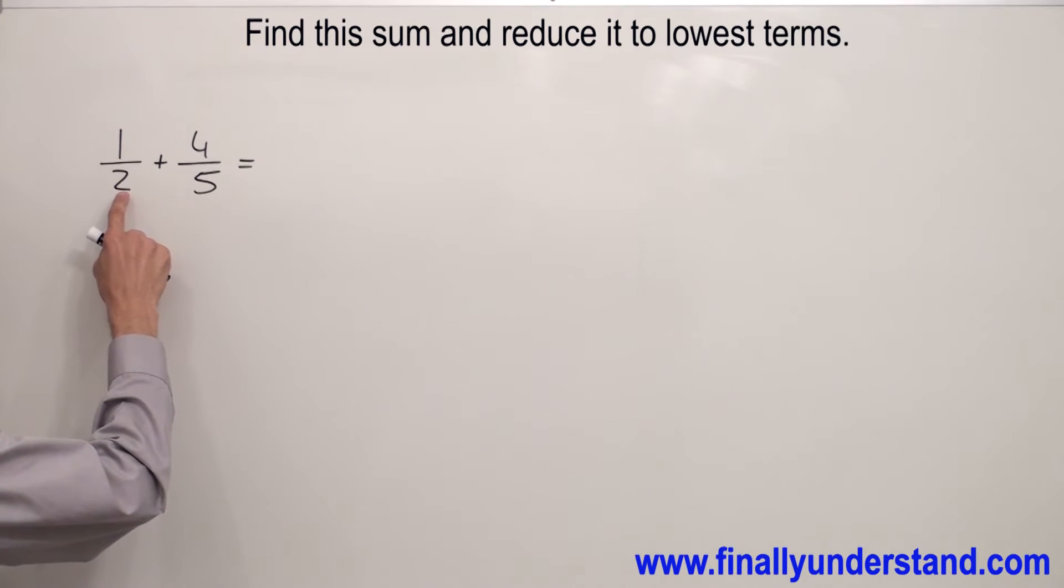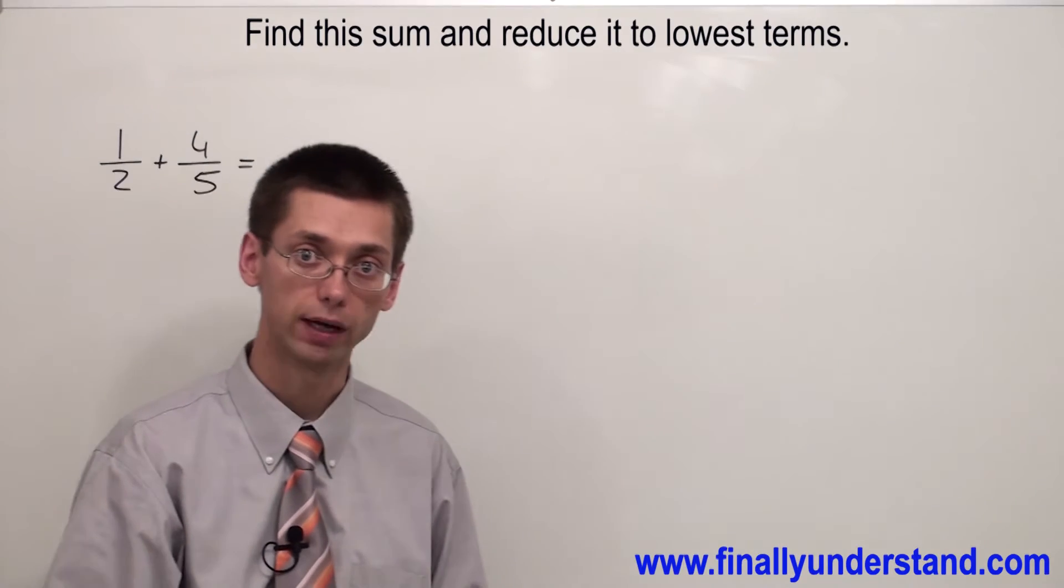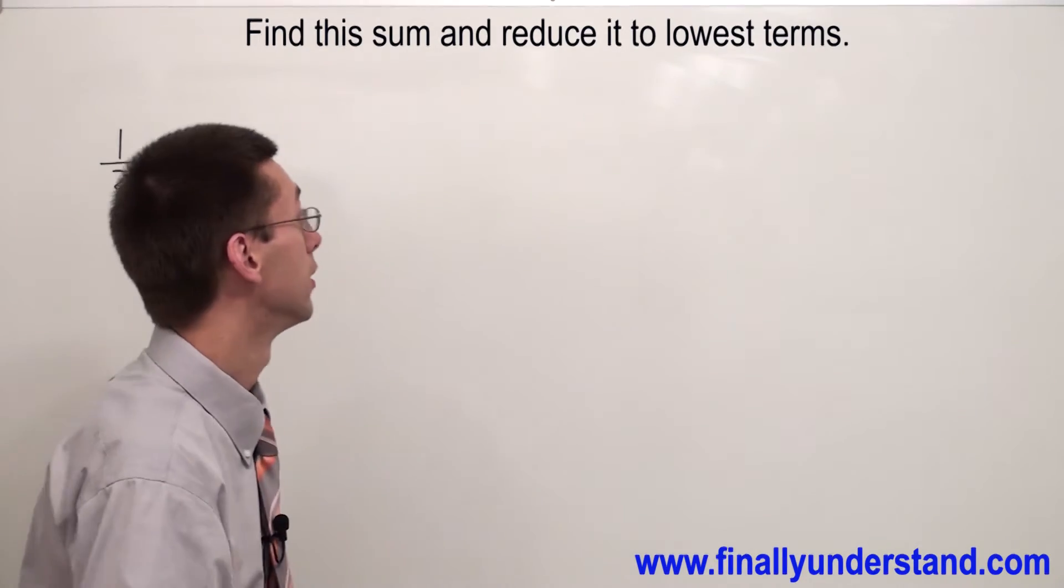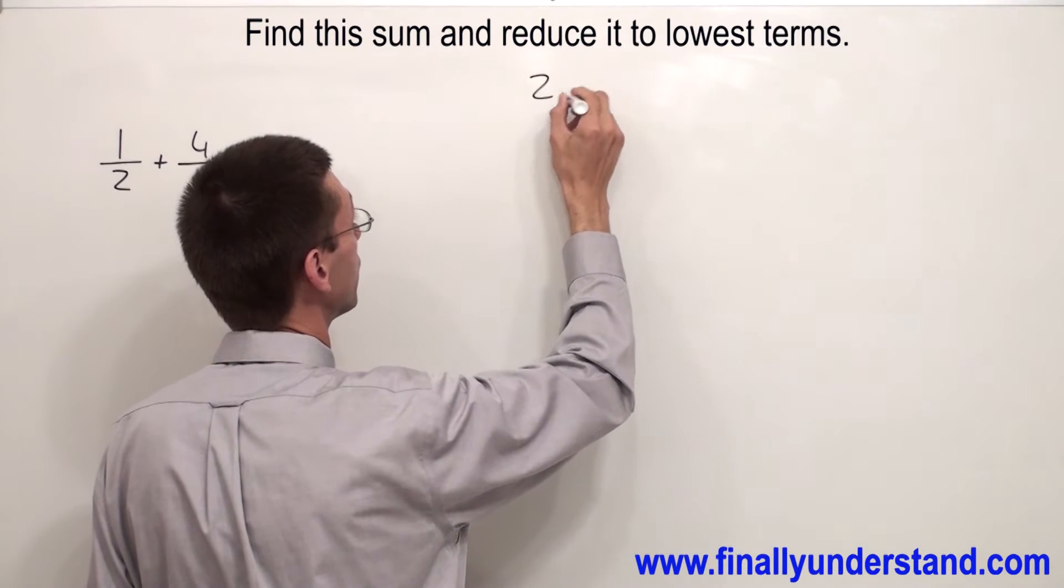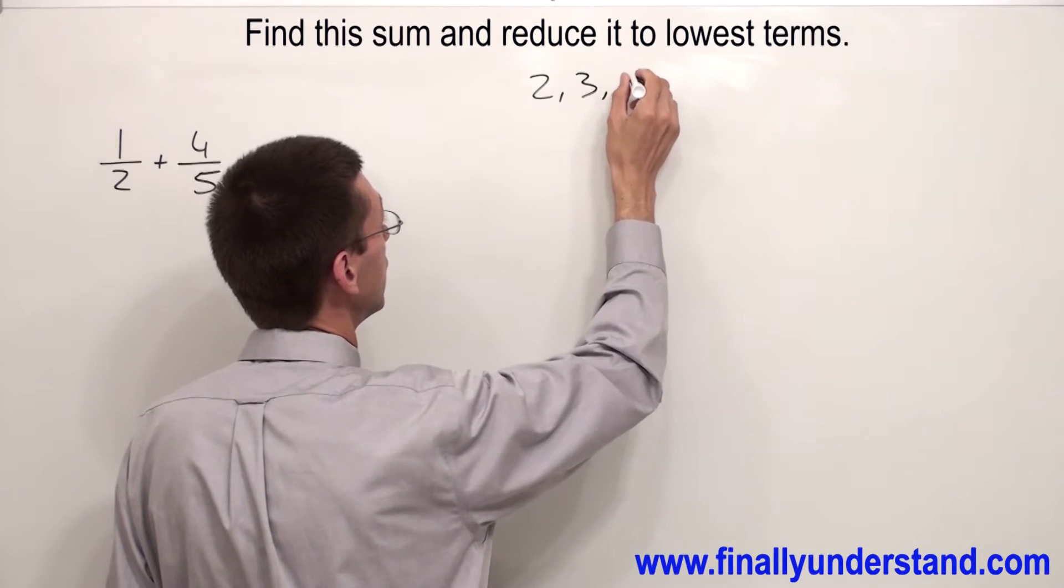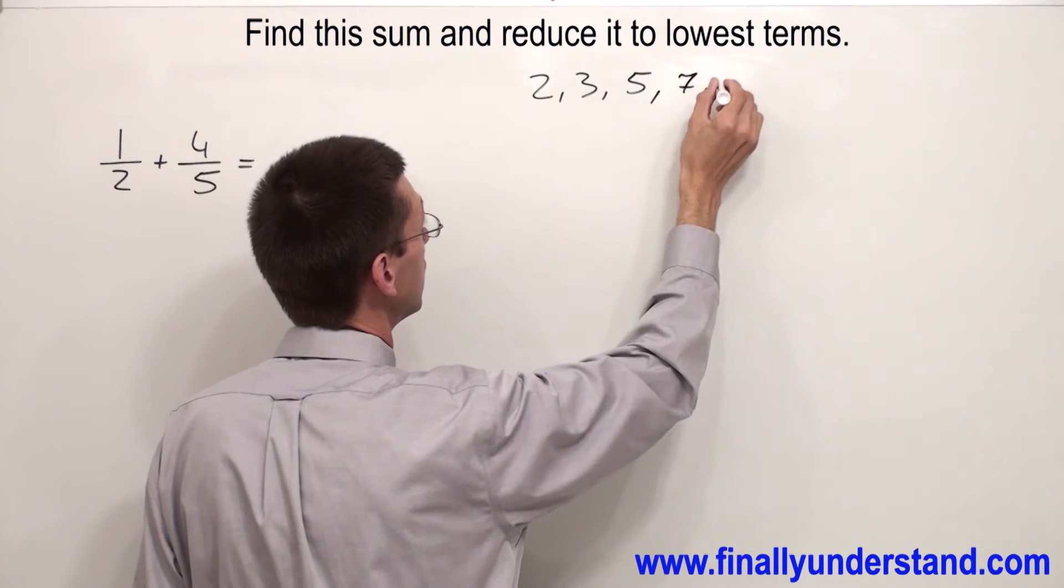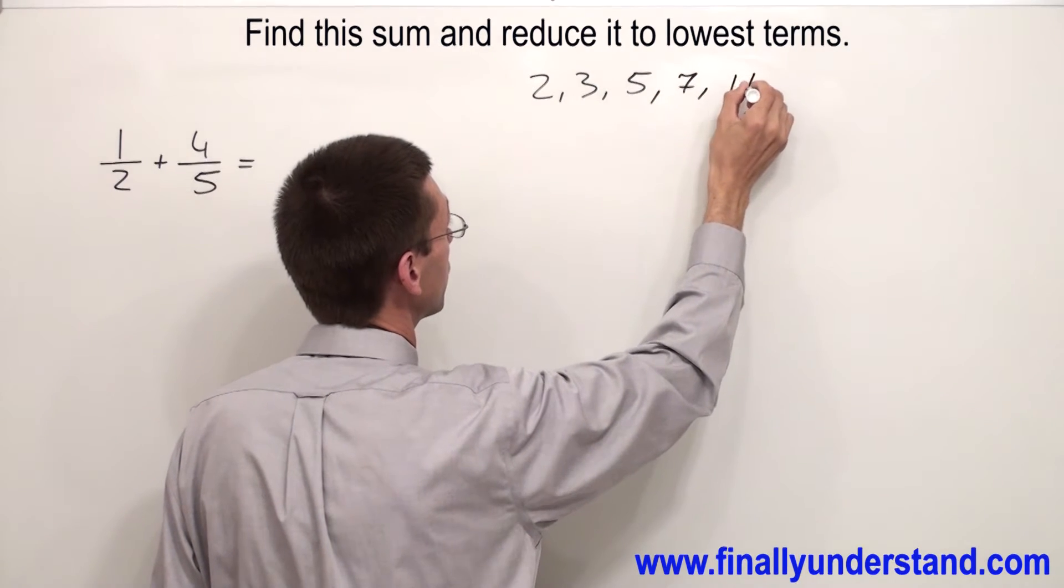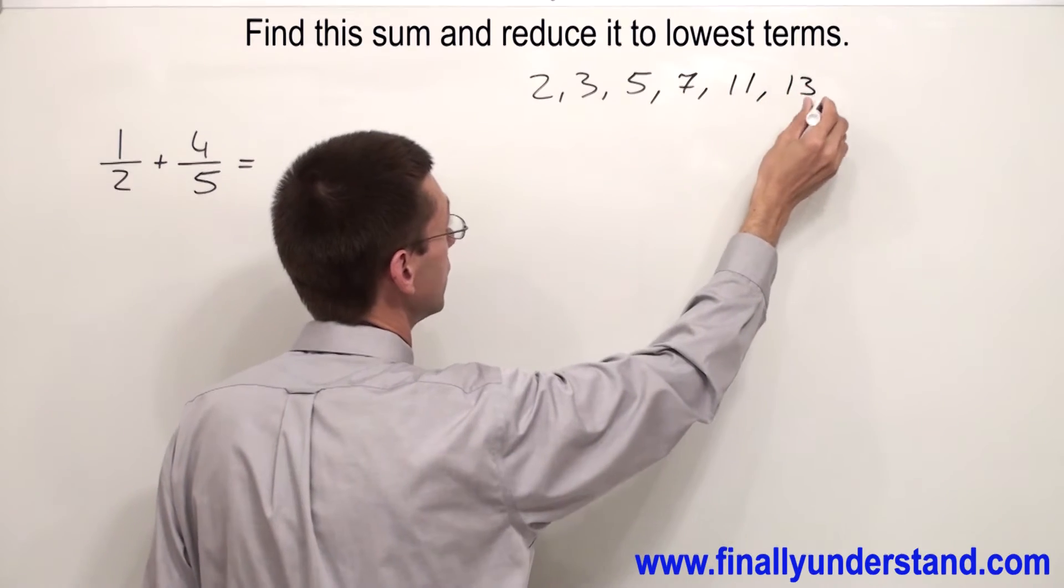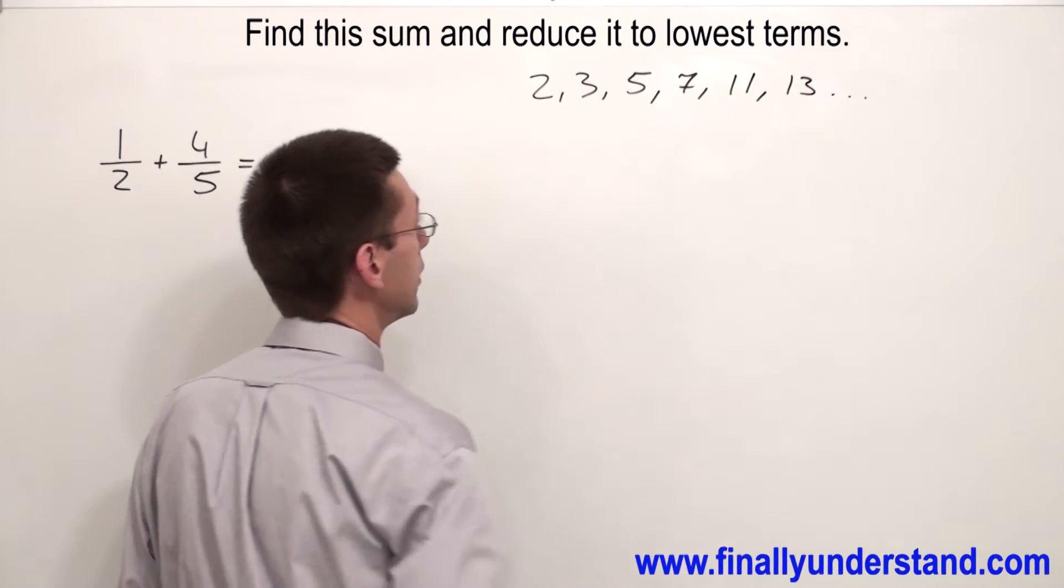Now please notice that 2 is the prime number and 5 is the prime number. Remember that the prime numbers are the numbers which we can divide by 1 or by itself only. The examples of the prime numbers are 2, 3, 5, 7, 11, 13 and so on.